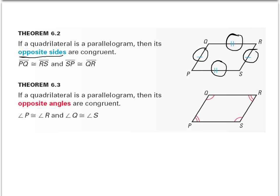Theorem 6.3 talks about angles. So if a quadrilateral is a parallelogram, then its opposite angles are congruent. So opposite sides of a parallelogram are congruent and opposite angles are congruent as well.